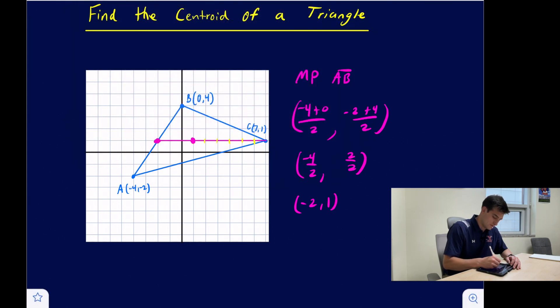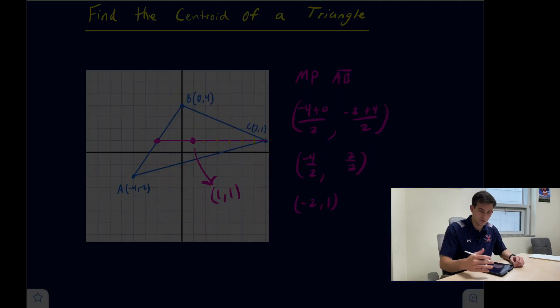Excuse me, our centroid. So there's where our centroid would be located. It's two-thirds of the way along the median and we look at where that point is located and it is one comma one. So we have found the centroid of the triangle on a coordinate plane.